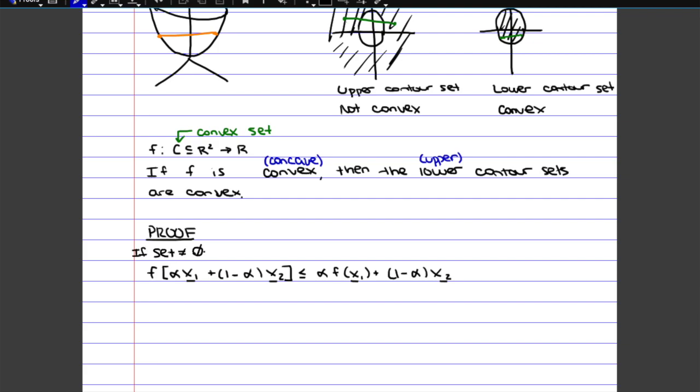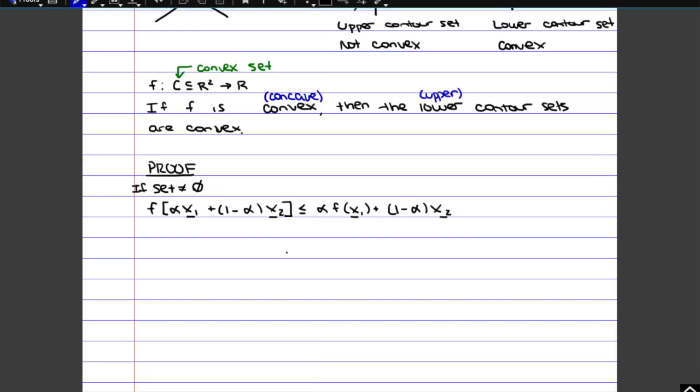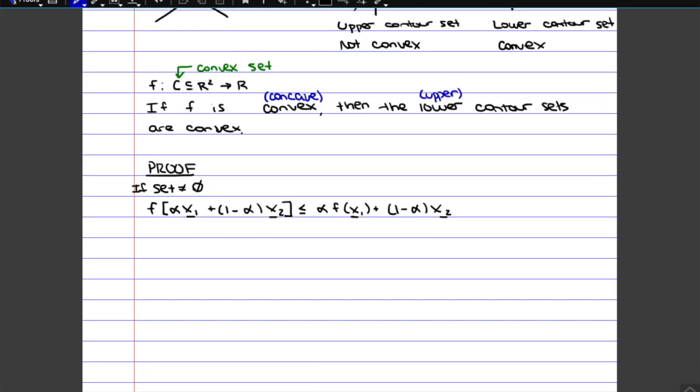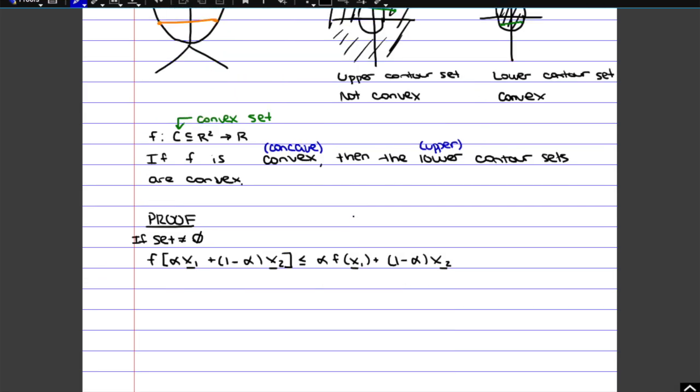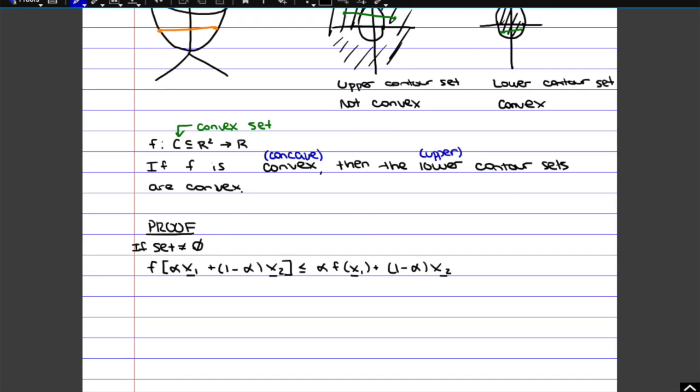So this would be assuming that our set is not empty. So if it's not equal to the empty set. Now if we know that we're looking at the lower contour sets, that means that we're making our function smaller or equal to k.